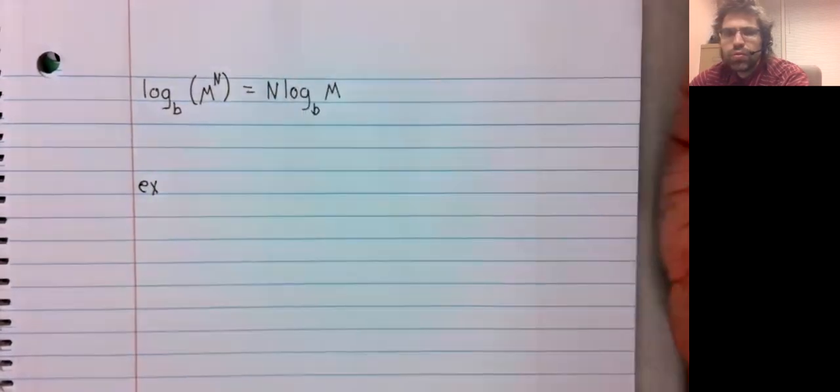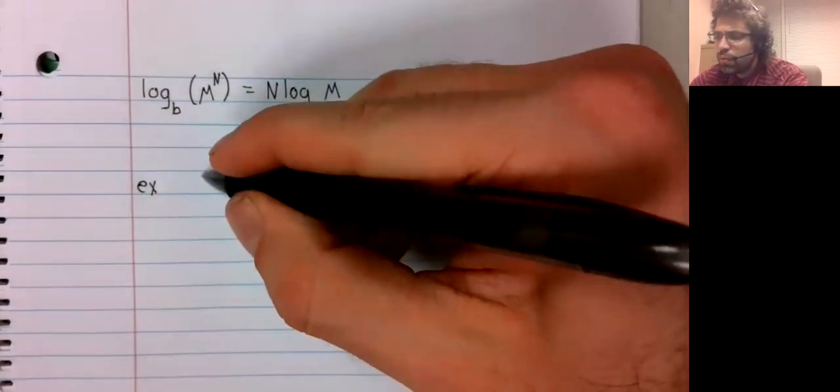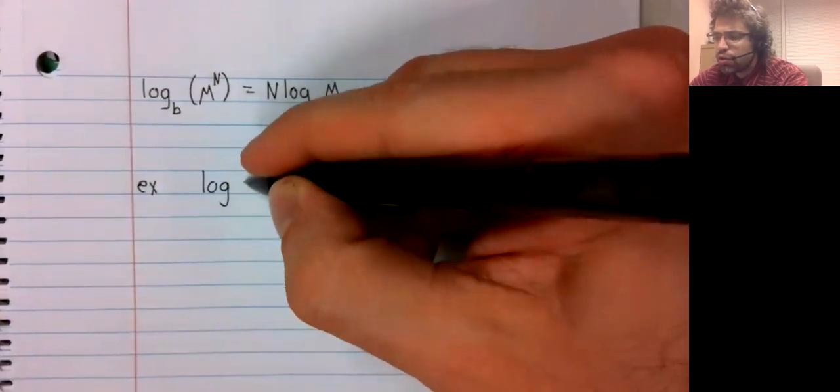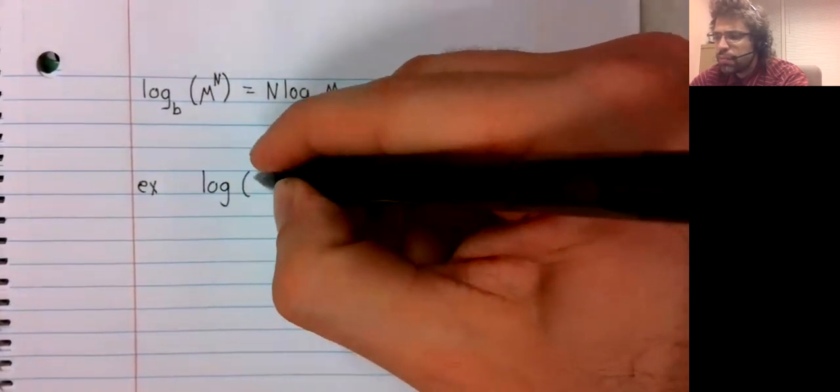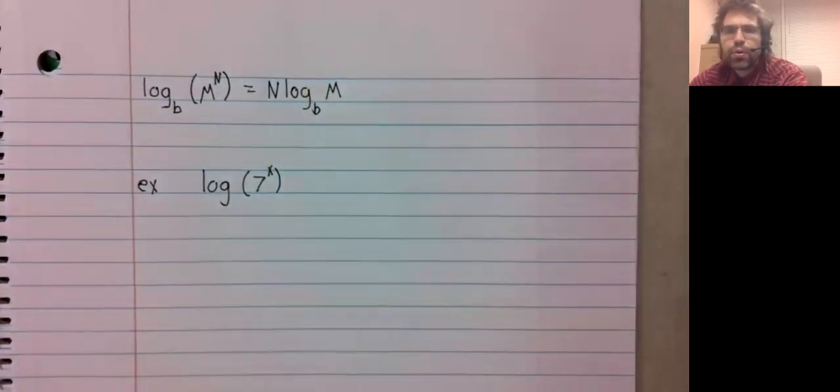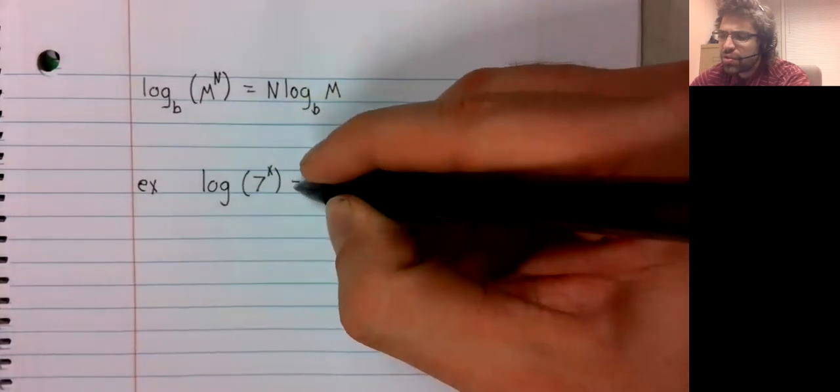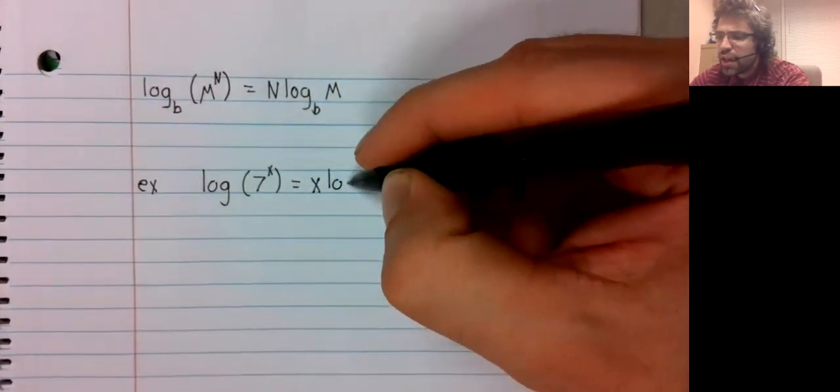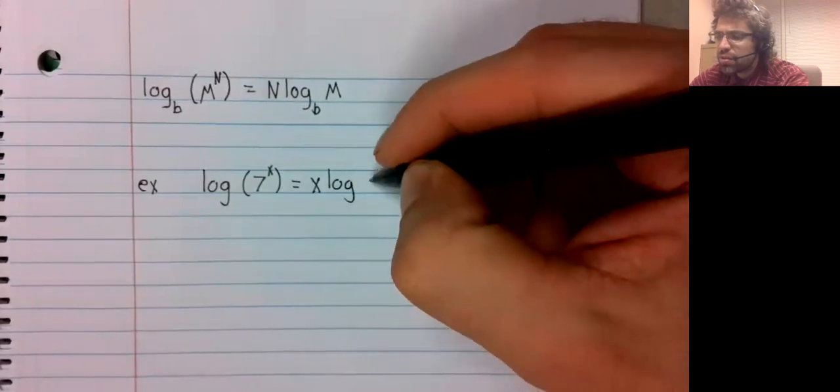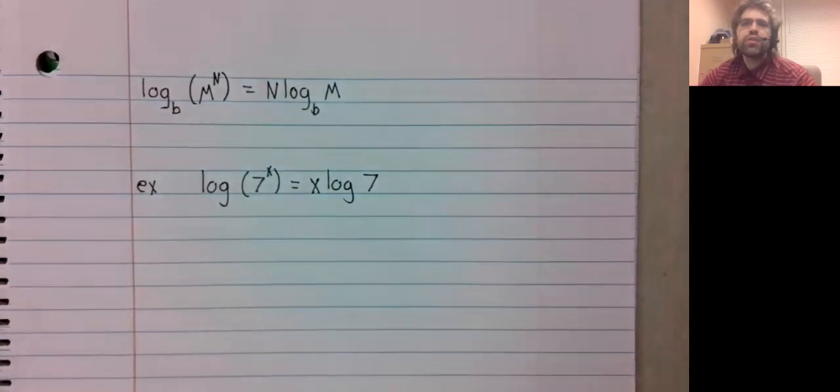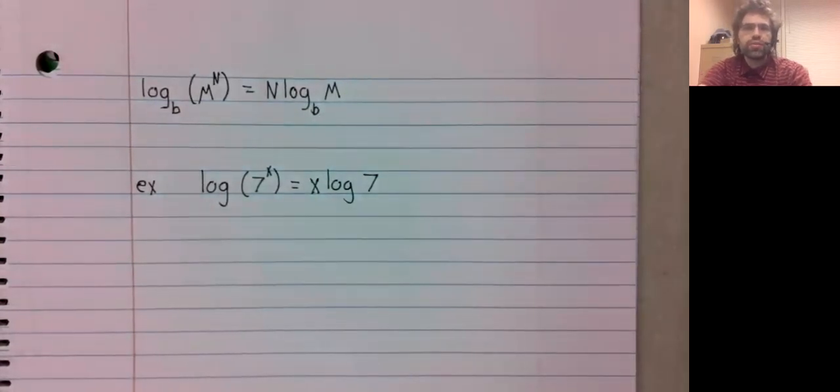So for example, if you take the common logarithm of seven to the power of x, that's x times the common logarithm of seven.